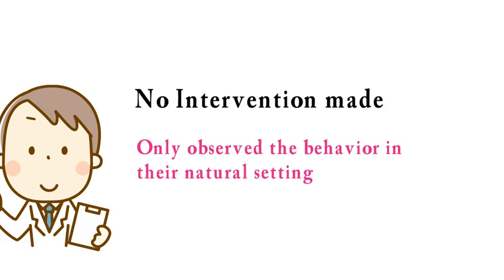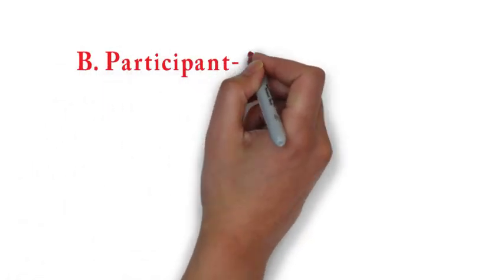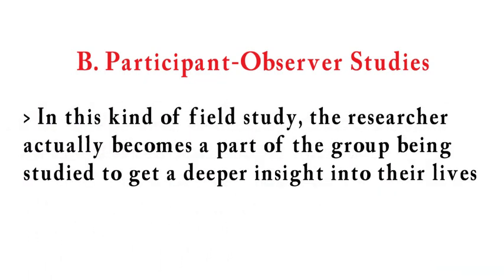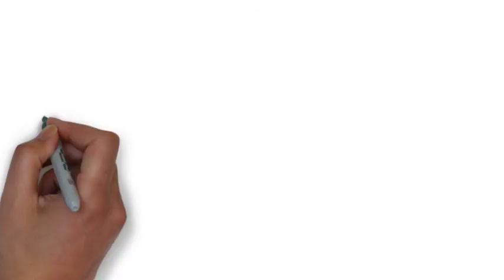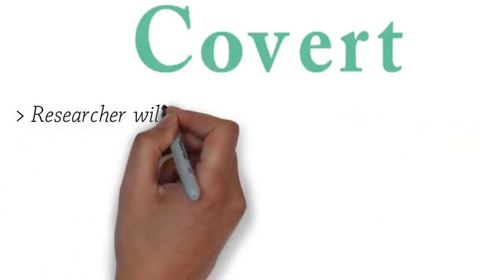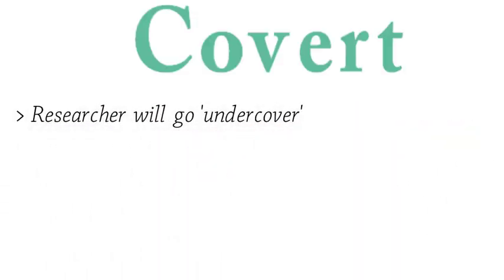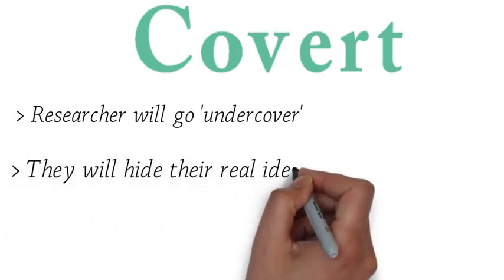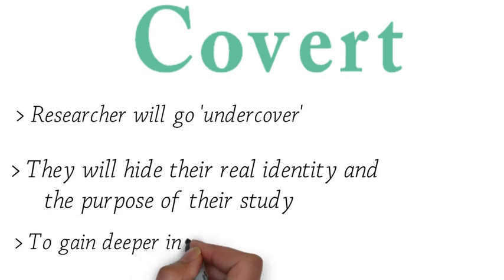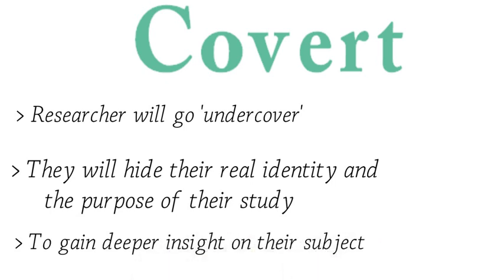Next, we have participant observer studies. In this kind of field study, the researcher actually becomes a part of the group being studied to get a deeper insight into their lives. Participant observations can also be either covert or overt. Kapag covert, the researcher will be undercover and they will hide their real identity, at hindi rin nila sasabihin kung ano yung purpose ng study nila, for them to gain deeper insight into their study.